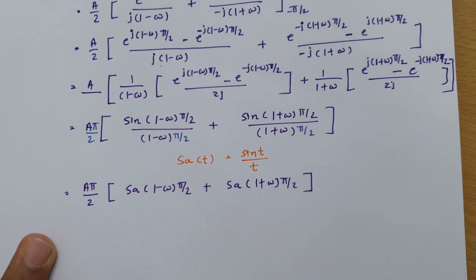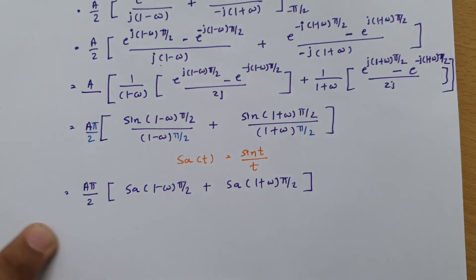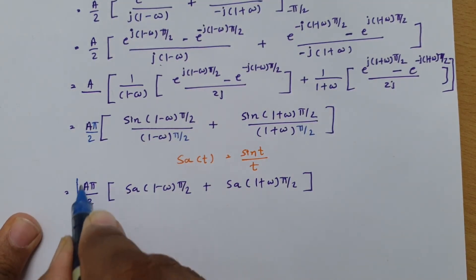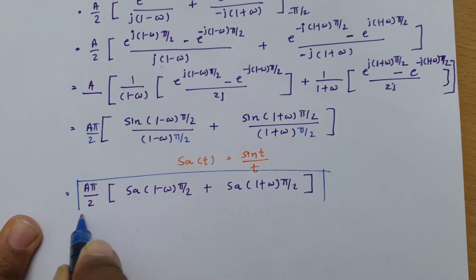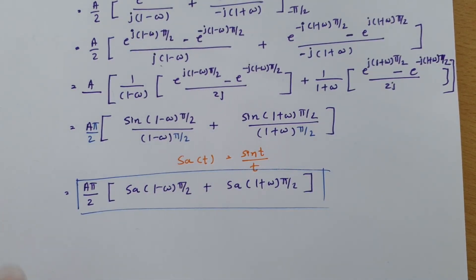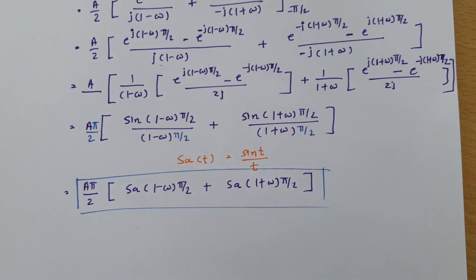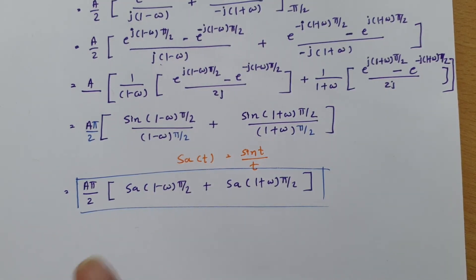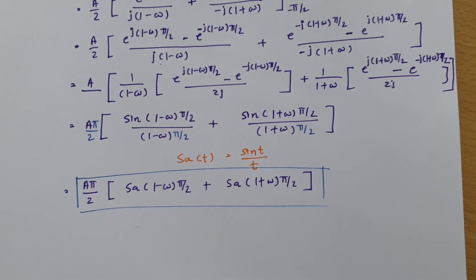So that is the Fourier transform of a cosine signal. I hope you understood this session. Thank you so much for watching this video. You can download this material from my application, and your suggestions are most welcome — based on them, I will make future videos to address your queries.